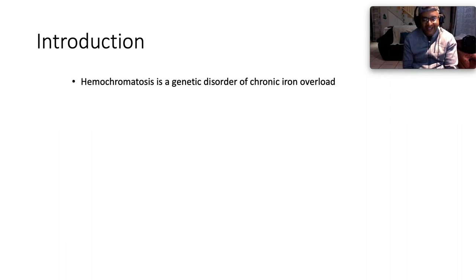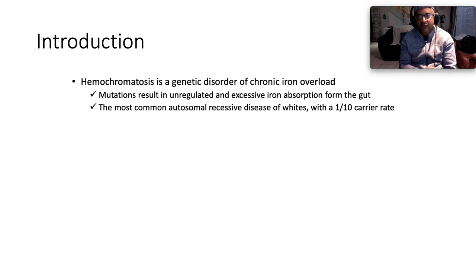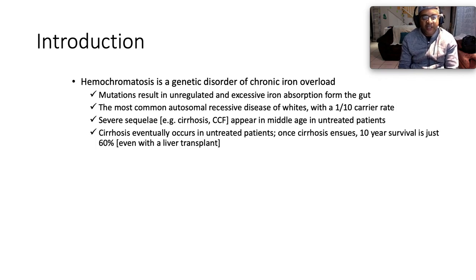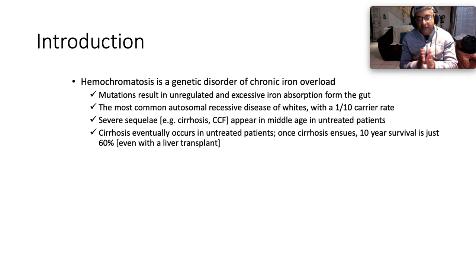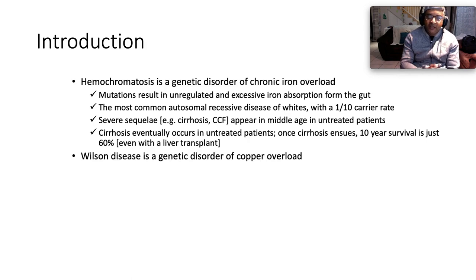Hemochromatosis is a genetic disorder of chronic iron overload. Mutations result in unregulated and excessive iron absorption from the gut. It is the most common autosomal recessive disease of whites, with a one-in-ten carrier rate. Severe sequelae like cirrhosis and congestive heart failure appear in middle age among untreated patients. Once cirrhosis ensues, 10-year survival is just 60%, even with a liver transplant.